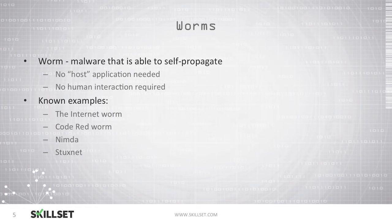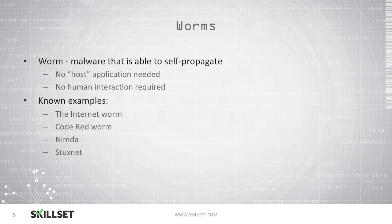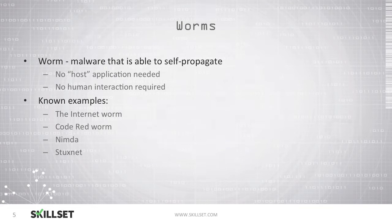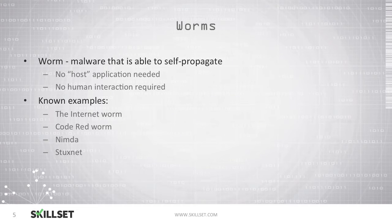Worms are slightly different than viruses because they are able to self-propagate. There is no need for a host application and there is no human interaction required. You should remember for the CISSP examination that worms do not need a host application and that they are able to self-propagate where viruses are not. Some known examples of worms include the Code Red worm, the Stuxnet virus, and the Internet worm.